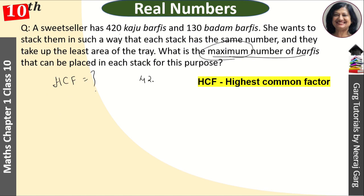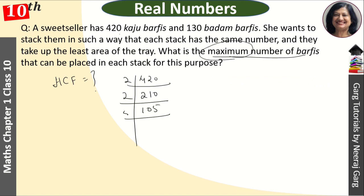Make 420 factors. What is equal to 2, 210. Then again 2, 105. Then 5, 21, 3, and this is our 7. Right? So this is from 7 and this is 1.